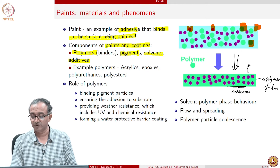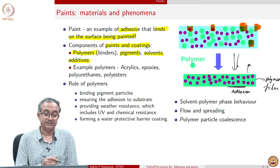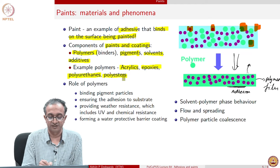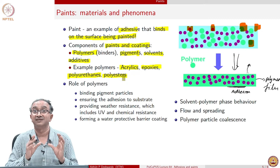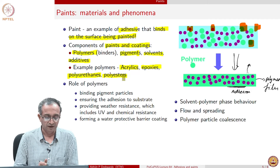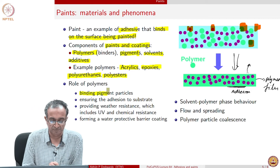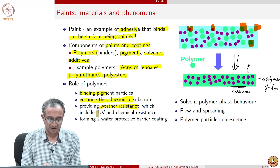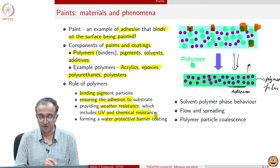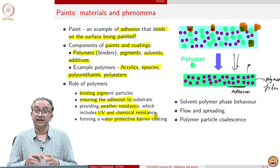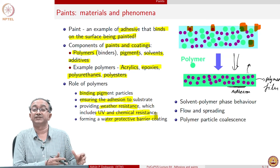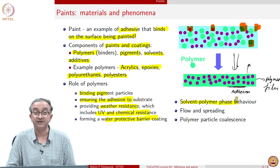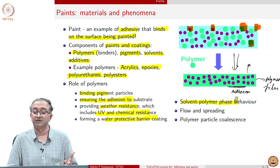Therefore, polymers are quite crucial in this application. General examples of polymers used in paints are acrylics, epoxies, polyurethanes, and polyesters — many similar polymers, because adhesion is a very important component of paints. The role of polymers in summary is to bind pigment particles, ensure adhesion to the substrate, provide weather resistance including UV and chemical resistance, and form a water-protective barrier coating. In such a system going from a multiphase polymer-particle-solvent system to finally a polymer-particle system, many interesting thermodynamic questions related to miscibility of solvent-polymer systems are involved.